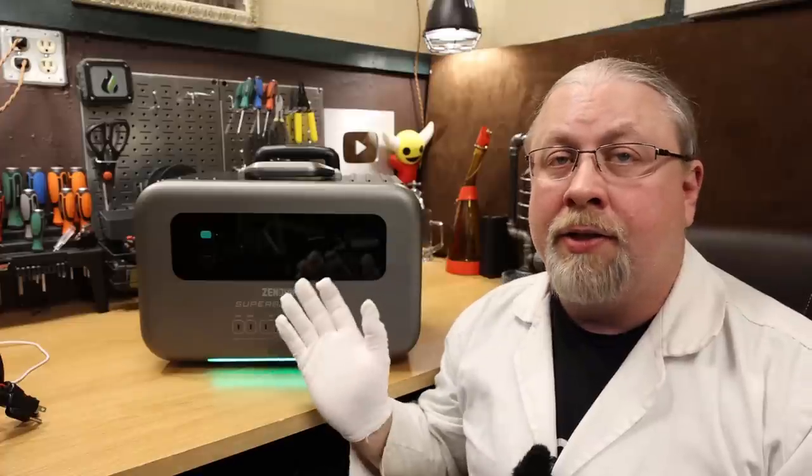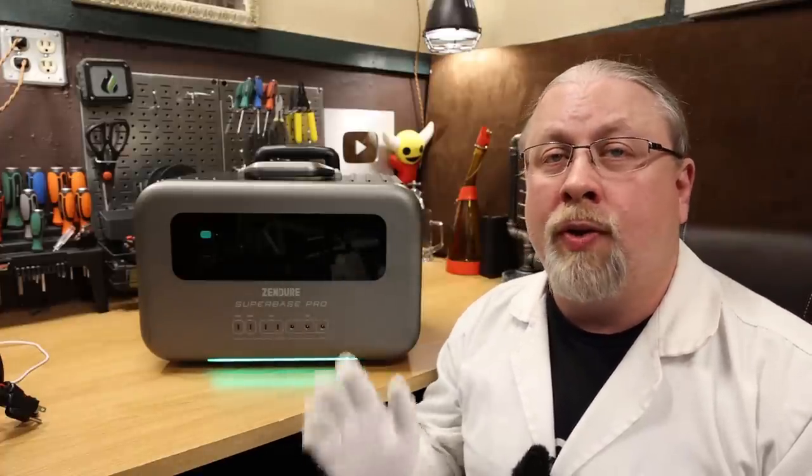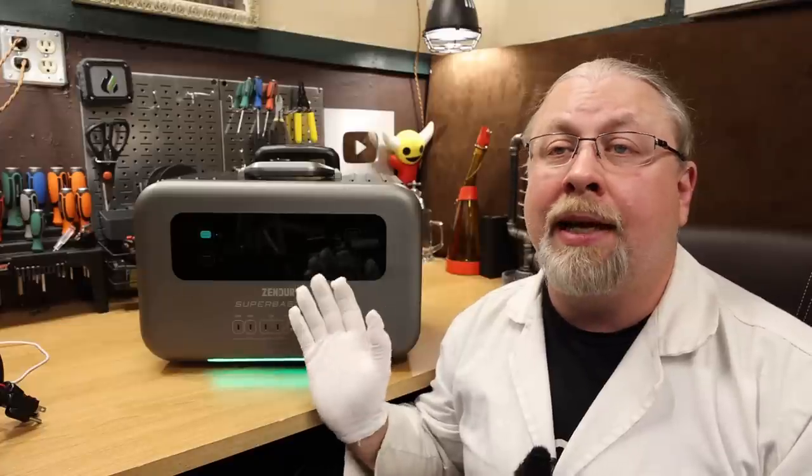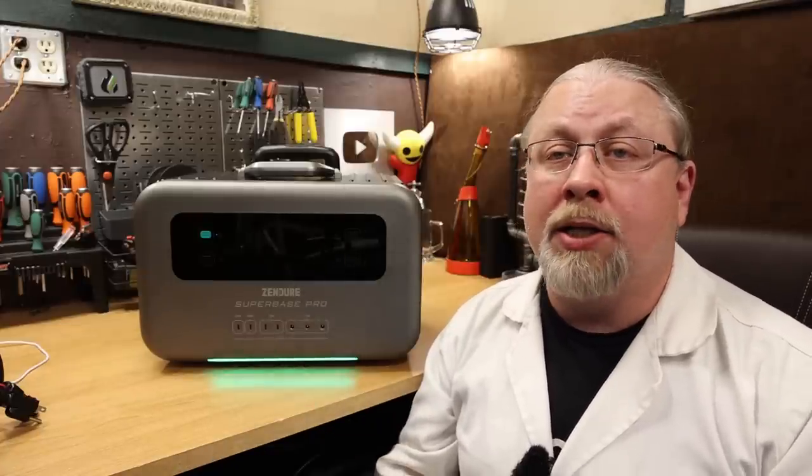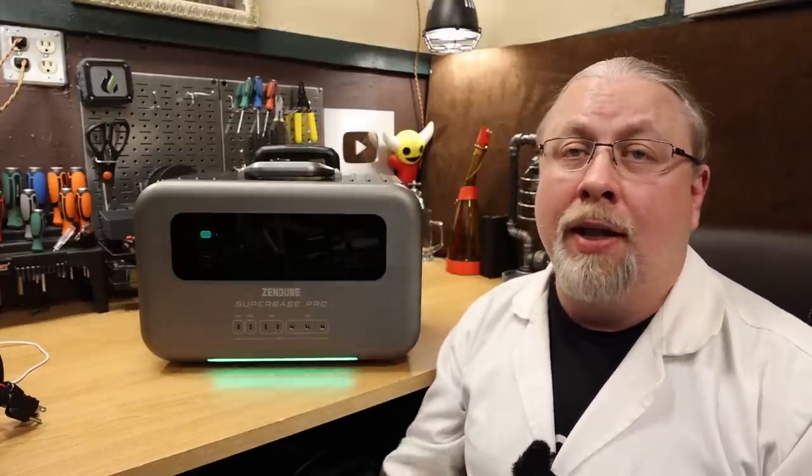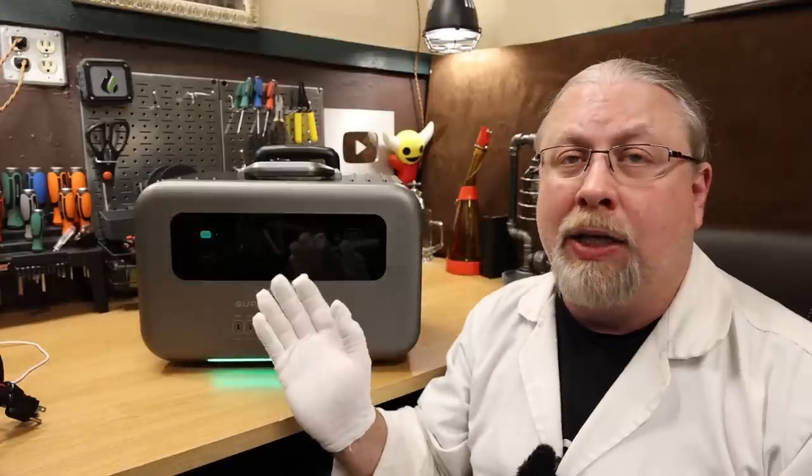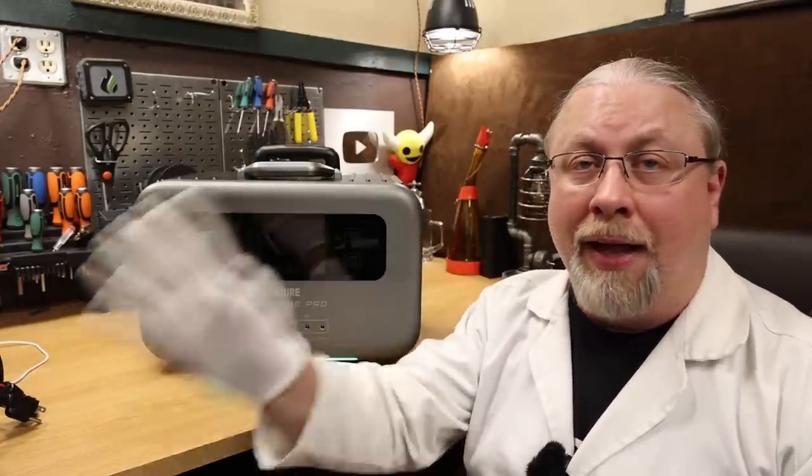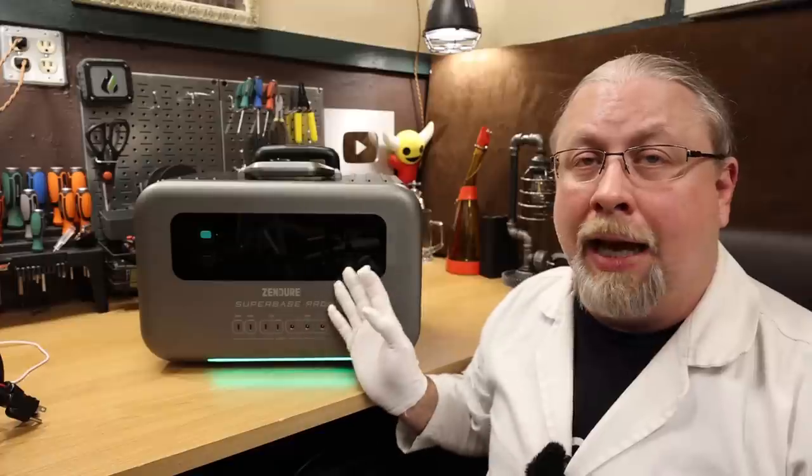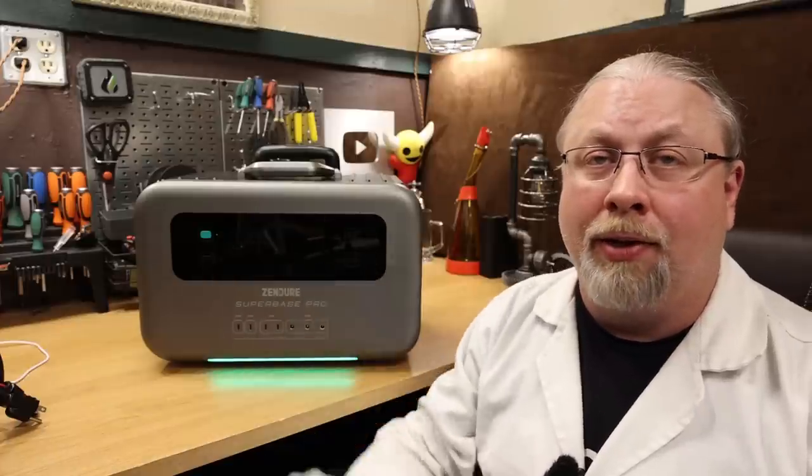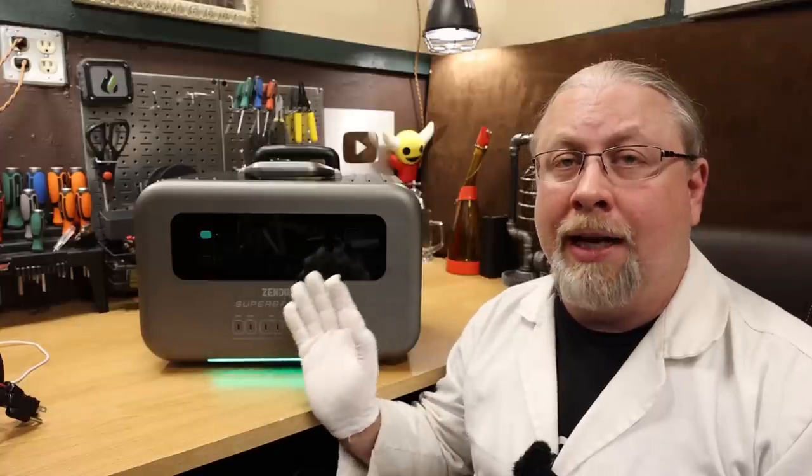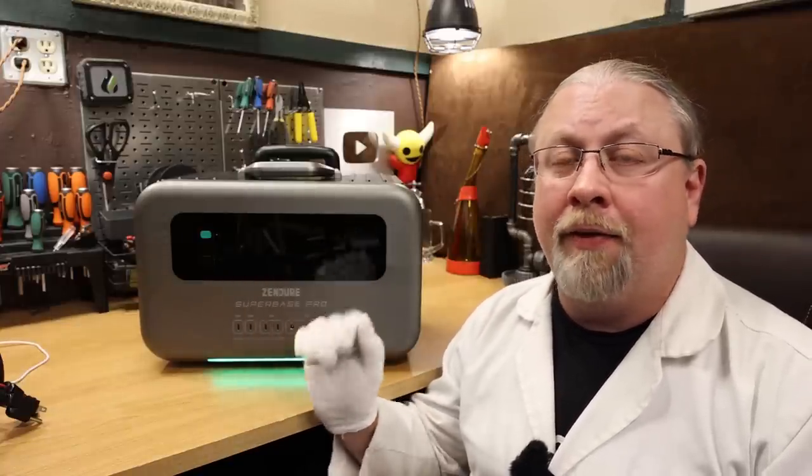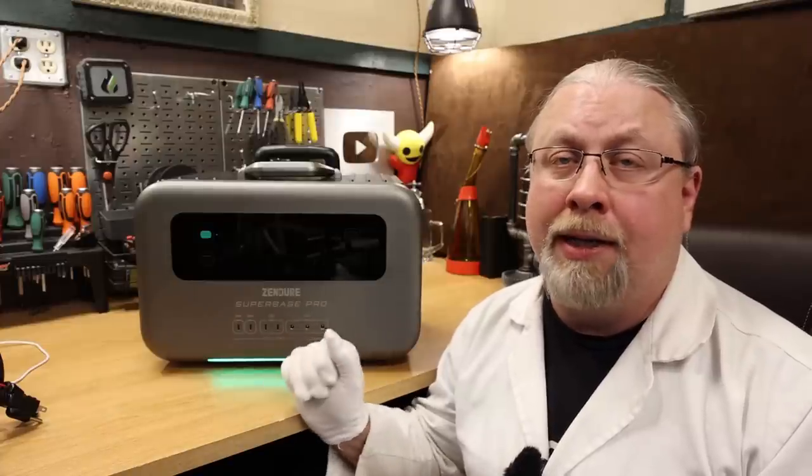As for other features, the Zendure SuperBase Pro does sport a true uninterruptible power supply feature, meaning it has a built-in UPS that will automatically switch loads to the battery when the power fails. So if you have this plugged into AC wall power or a fuel generator of some kind and that power stops, the battery inside will take over and power the loads off the inverter. Now, in the prototype review, I did actually show how fast the UPS switches over. It's definitely fast enough to support a modern PC computer.